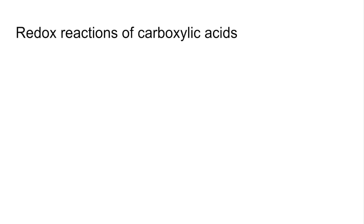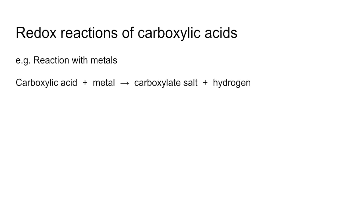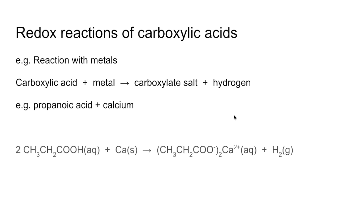Looking at the chemical reactions, we'll start with the redox reactions of carboxylic acids. When they react with metals, we get a carboxylate salt and hydrogen. The example here is propanoic acid with calcium — there's the equation, and note that we need two carboxylate ions for the calcium 2+ ion. That salt is called calcium propanoate.